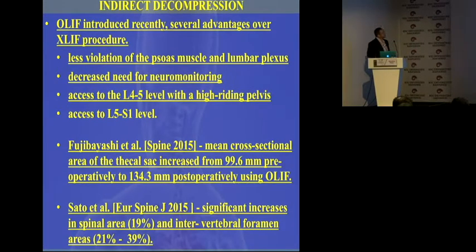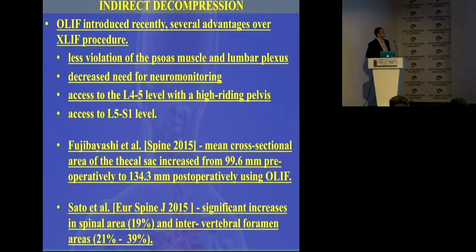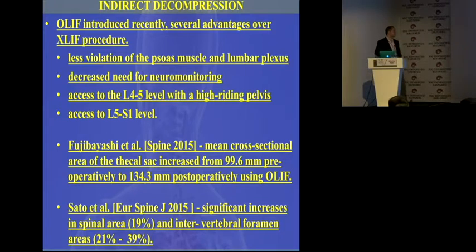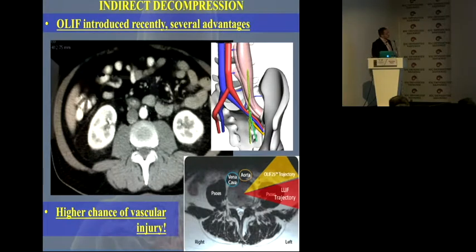OLIF is a relatively new technique that tries to overcome the drawbacks of the XLIF procedure. With OLIF, you go in front of the psoas, which means you violate the psoas muscle less. That gives you less need for neuromonitoring, access to L4-L5, and access to L5-S1. Good research suggests you still accomplish the job, similar to XLIF: over 30% increase of the thecal sac area and over 35–39% increase of the foramina — so good indirect decompression.